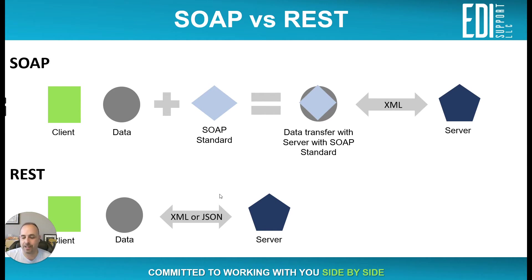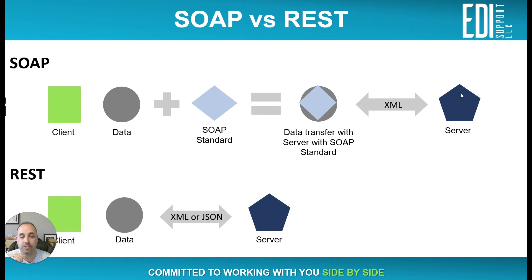Think of it this way — it's a good analogy that works. If you think of going to a restaurant, that restaurant is essentially the server that you want to connect to. You get a menu when you make that connection. The menu tells you what you are allowed to access, or the data that you're able to obtain. You then place your order, your order goes back to the restaurant, and the restaurant kitchen supplies you the information back.